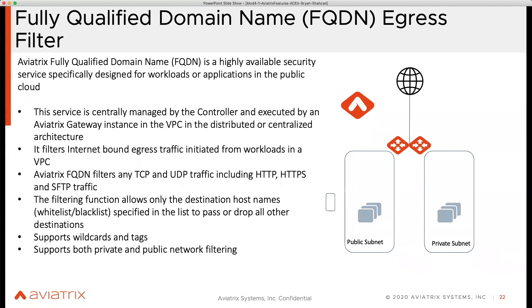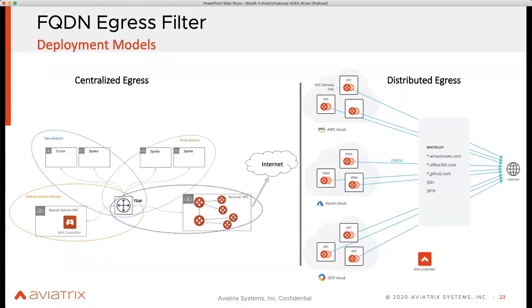These are the two deployment models. On the right-hand side you see a distributed model. In this model, each and every VPC will have a gateway deployed in it, which will replace the NAT gateway, and then traffic will go out from there. This is a very popular model because this is how enterprises deploy VPCs — every VPC is responsible for going out and fetching whatever it needs. You create a whitelist and that's how you go out towards the internet.